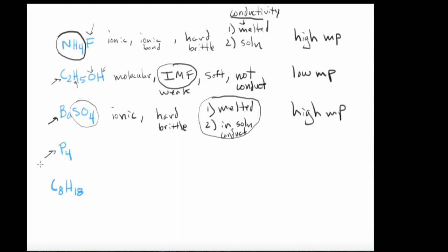P₄ — this is a non-metal, so it is going to have molecular-type bonding. It's going to be soft, non-conductive, and it's going to have a low melting point.